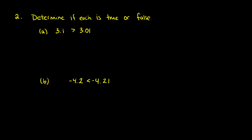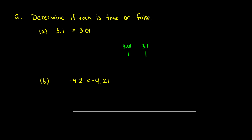Now to test your number line ability — determine if these statements are true or false. Let's draw two number lines to plot these. First: is 3.1 greater than 3.01? Plotting these, 3.1 is 3 and 1 tenth, while 3.01 is slightly smaller — it is 0.09 away from 3.1. So yes, this is a true statement because 3.1 is bigger than 3.01.